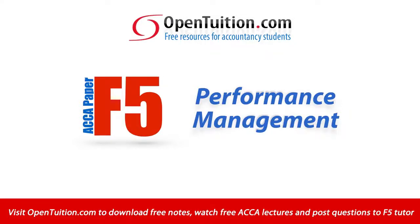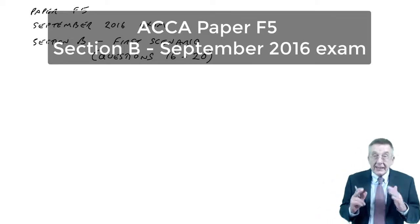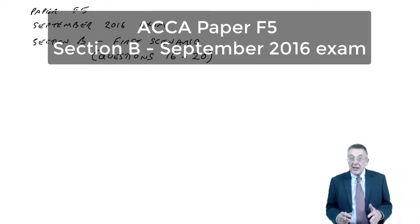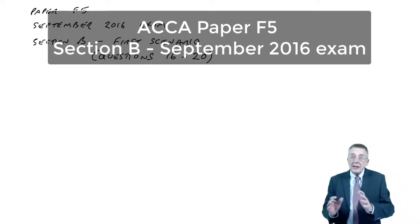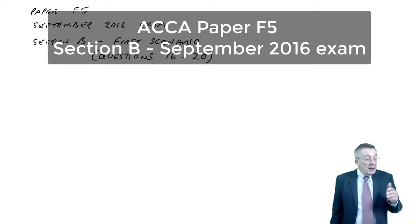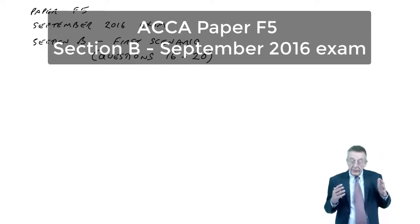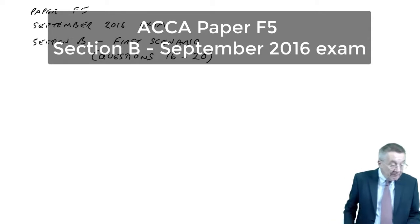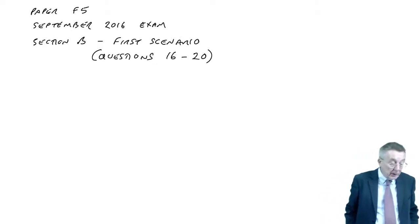This is a lecture from OpenTuition. To benefit from the lecture, you should download the free lecture notes from OpenTuition.com. I'm going to go through the first scenario in section B of the September 2016 F5 exam. In section B we've got three scenarios, each with five multiple choice questions. So I'm going to go through the first one, questions 16 to 20. There's no choice but to have a quick look at this scenario first before we go to the questions.